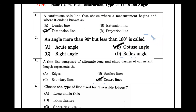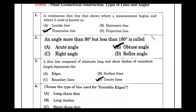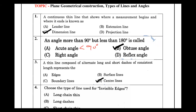The angle more than 90 degrees but less than 180 degrees is the obtuse angle. The acute angle is less than 90 degrees. The right angle is exactly 90 degrees. The reflex angle is greater than 180 degrees.